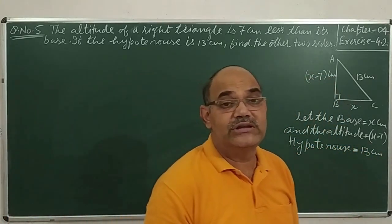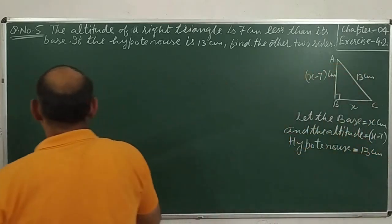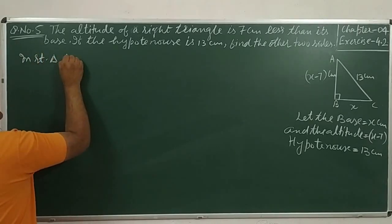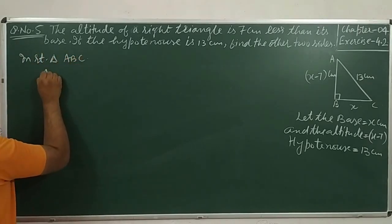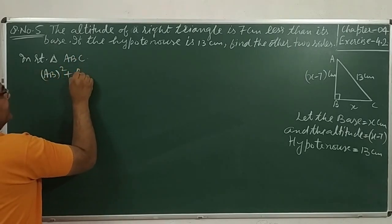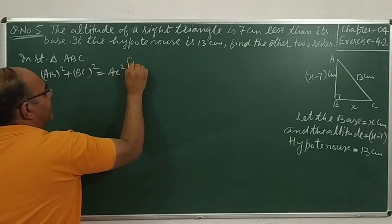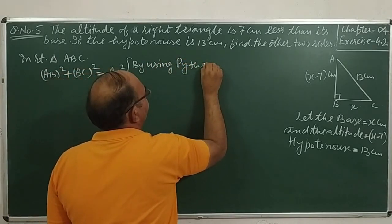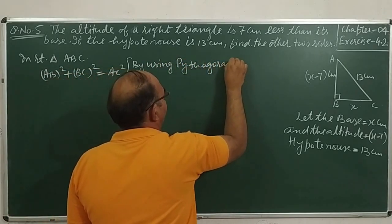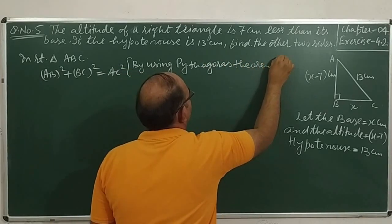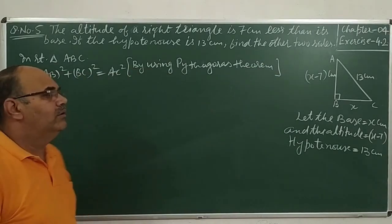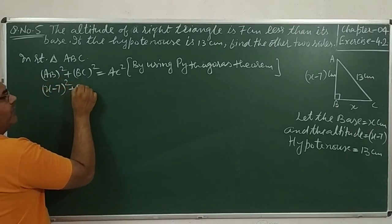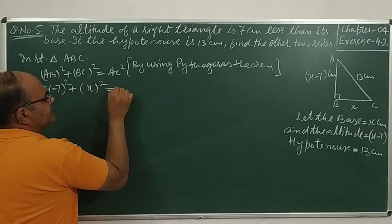Since it is a right triangle, we use the Pythagoras theorem. In right triangle ABC, AB square plus BC square is equal to AC square. Now put these values: here AB is x minus 7, so the whole square of x minus 7, plus the whole square of x, is equal to the whole square of 13.